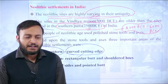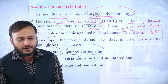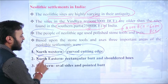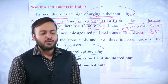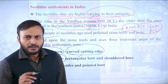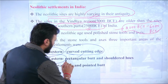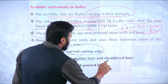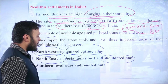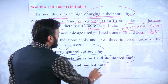In the northwestern type, the curved cutting edges were the feature of the stone tools. In the northeastern side — that is the Meghalaya and Garo Hills region — the type of axe used had a rectangular butt and shouldered hoe. In southern India, the axes had oval sides and a pointed butt.